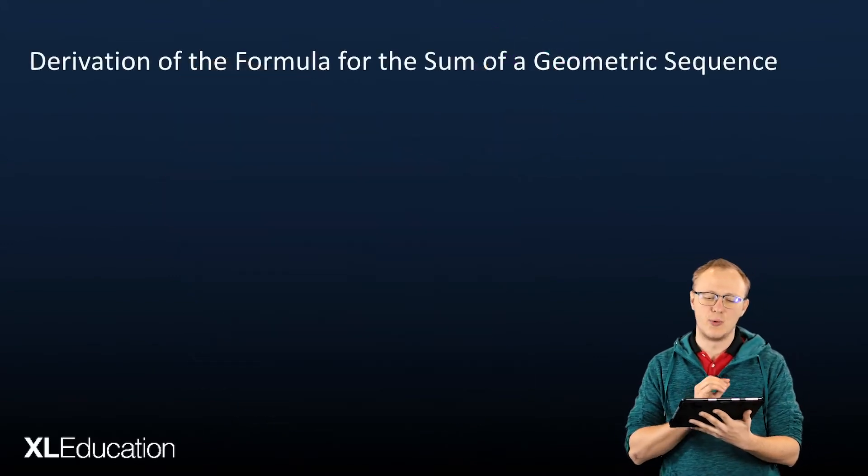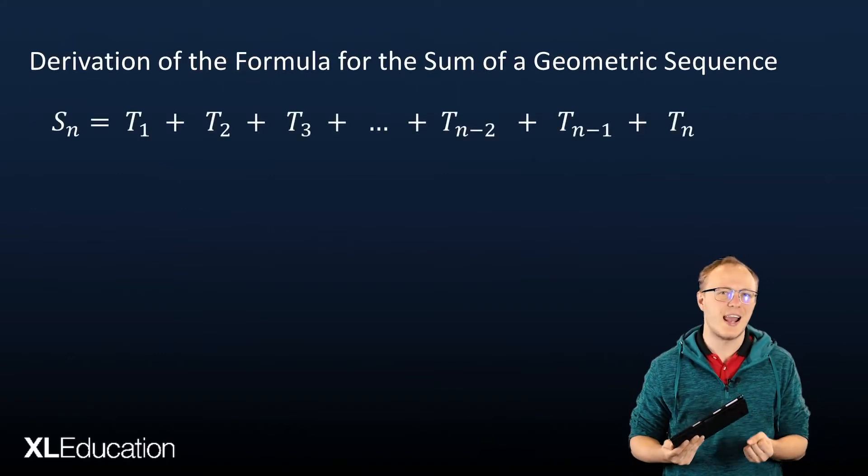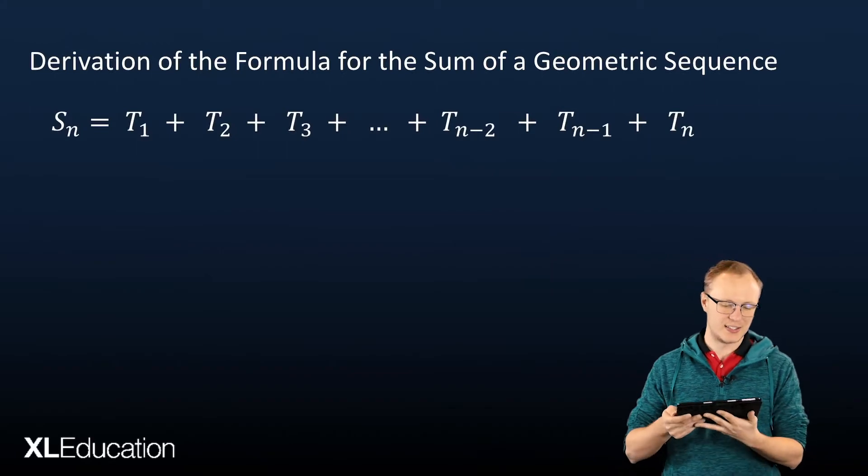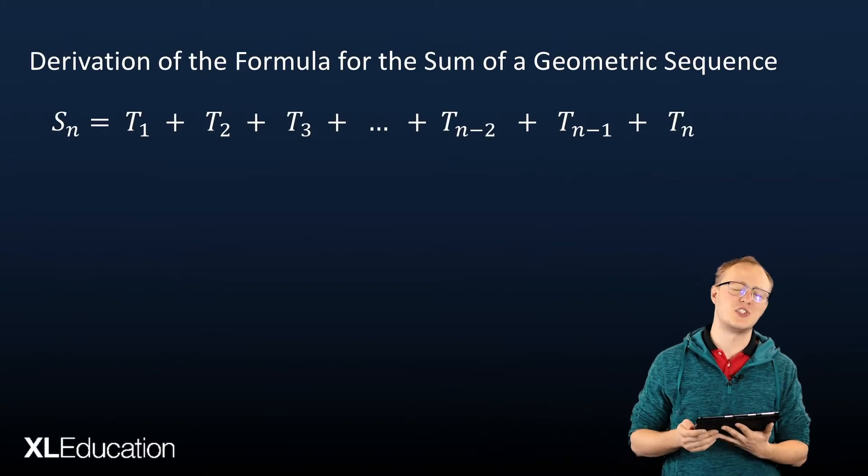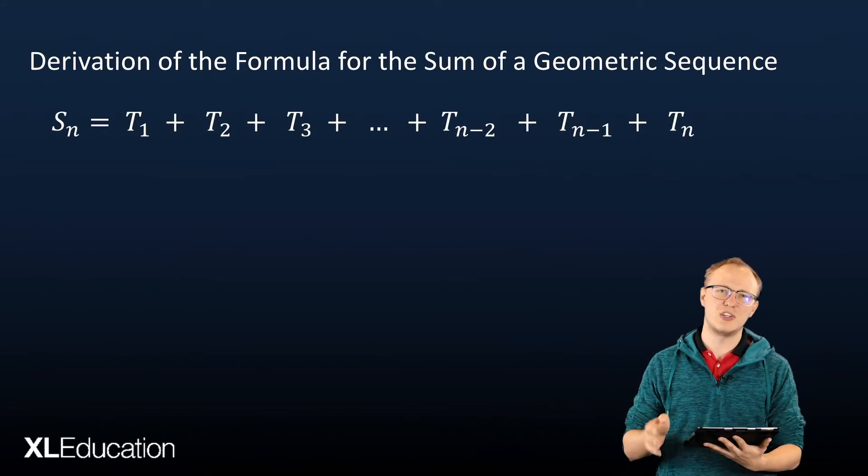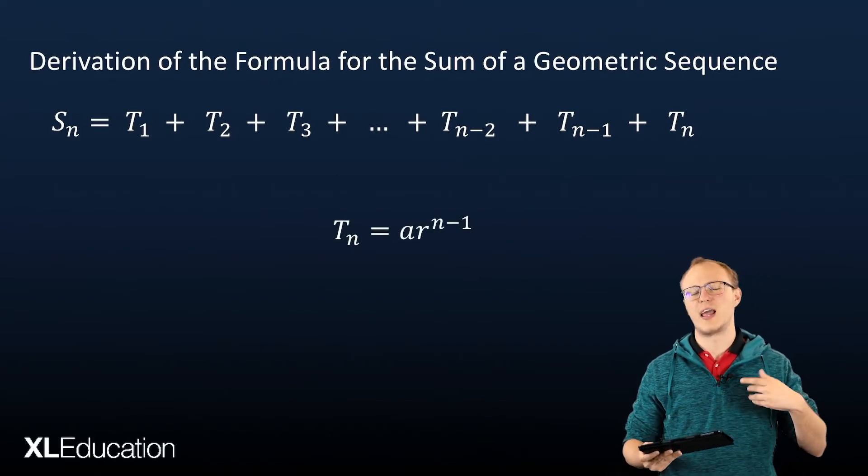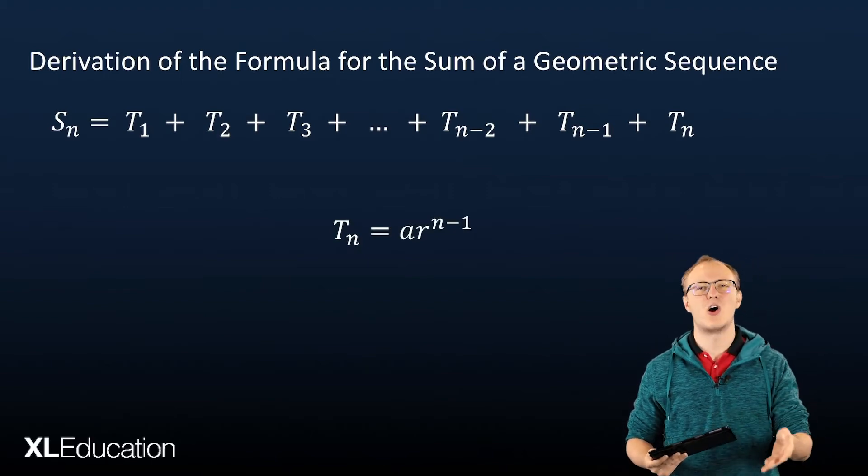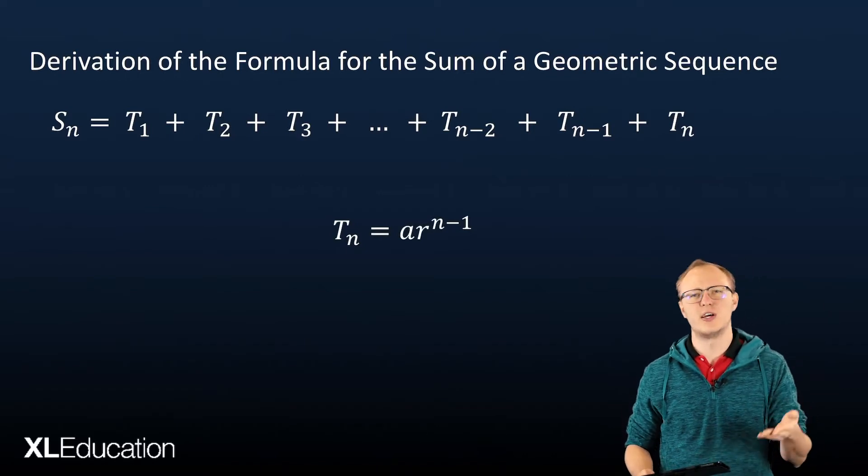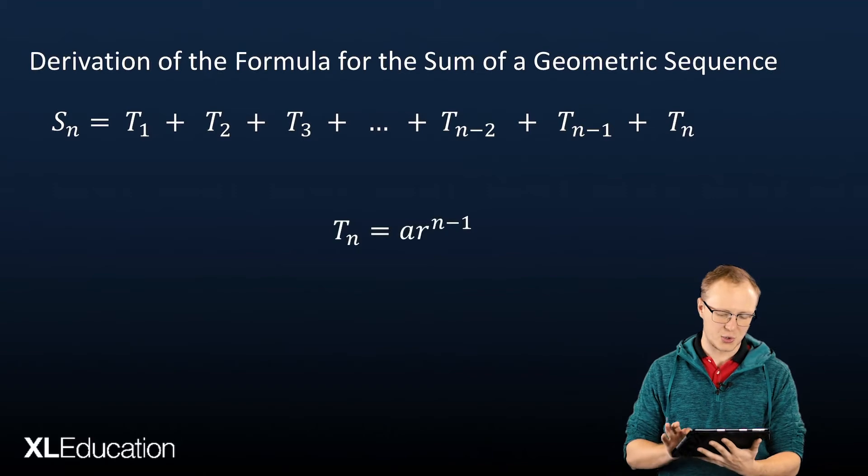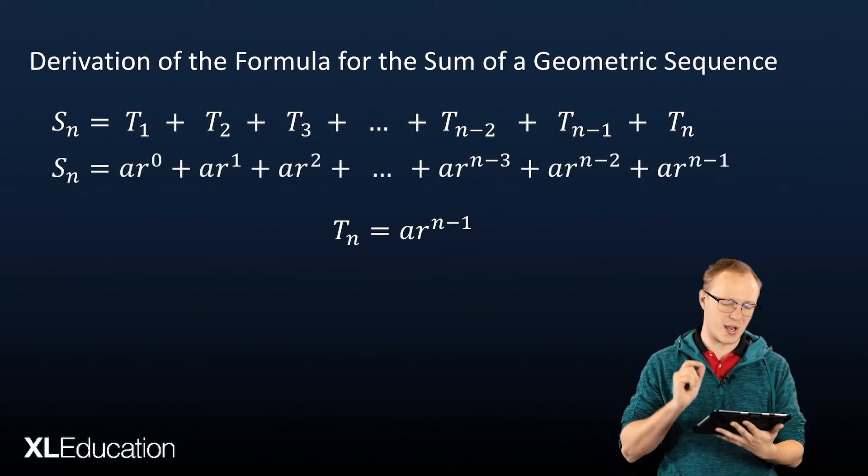Let's derive the formula for the sum of a geometric sequence. So we know that the sum of the first n terms of a sequence is equal to T1 plus T2 plus T3 all the way up until Tn. And because it's a geometric sequence, we know that each term can be expressed as Tn equals ar to the n minus 1. So term 1 is ar to the 0, term 2 is ar to the 1. So we're going to substitute that in for each of the terms that we're adding up.